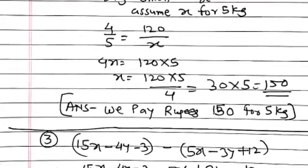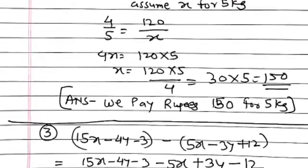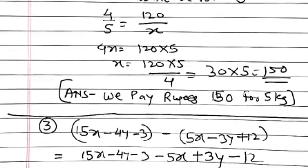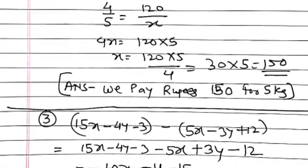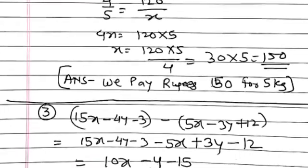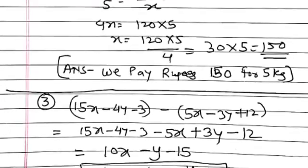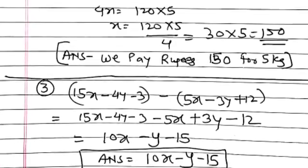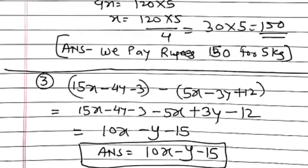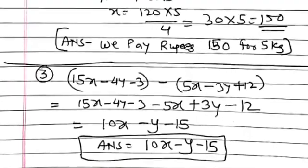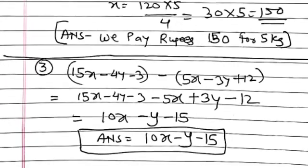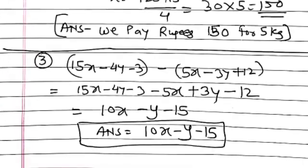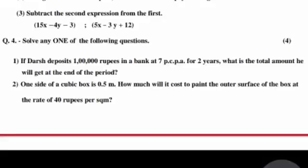Third question is a subtraction problem: 15x minus 4y minus 3, minus in bracket 5x minus 3y plus 12. By dissolving both brackets, the answer is 10x minus y minus 15.